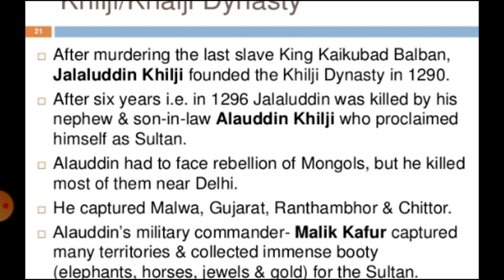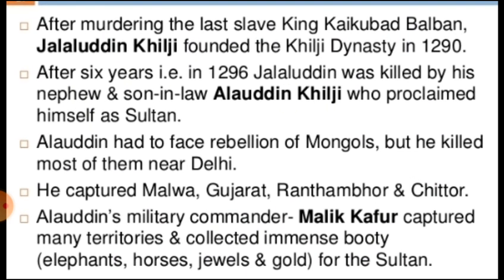Alauddin Khilji captured Malwa, Gujarat, Ranthambore, and Chittor, achieving great victories. His military commander Malik Kafur captured many territories and collected immense wealth — elephants, horses, jewels, and gold — for the Sultan. Malik Kafur was Alauddin's brave Sena Nayak who conquered many territories on his behalf.